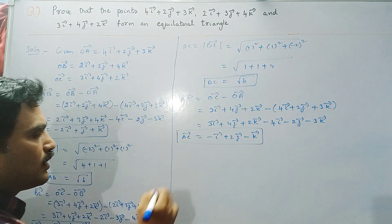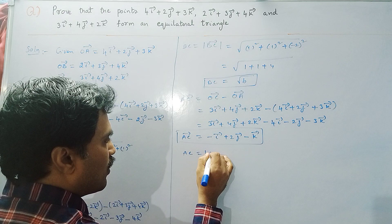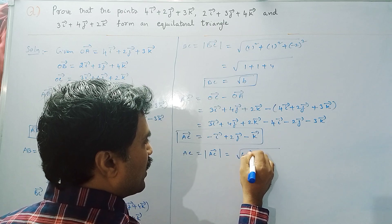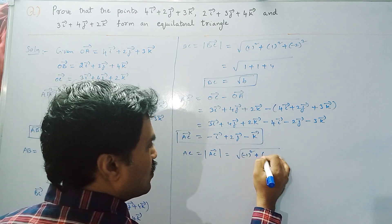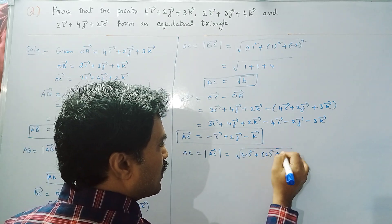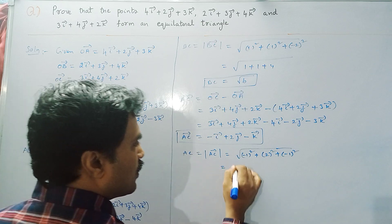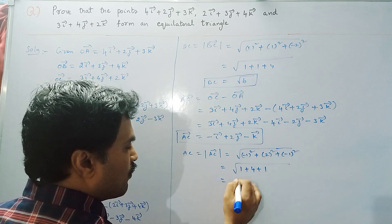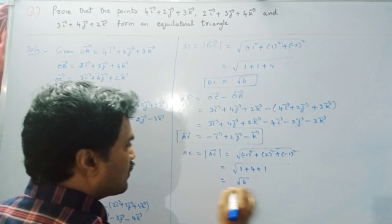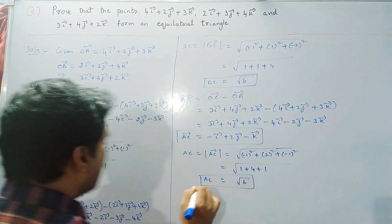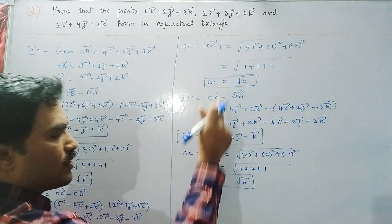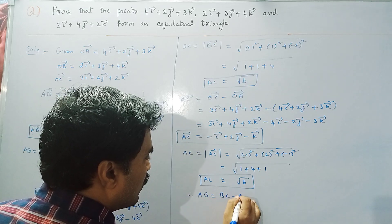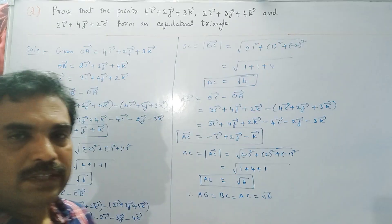Now we find the modulus of AC vector: |AC| = √((−1)² + 2² + (−1)²) = √(1 + 4 + 1) = √6. We can observe that |AB| = √6, |BC| = √6, and |AC| = √6, so |AB| = |BC| = |AC| = √6.